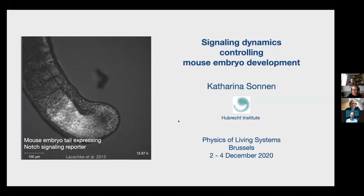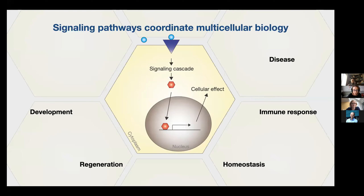In my lab, we study how multicellular systems develop and how they are maintained in the adult, and how signaling pathways control these processes. In multicellular systems, cells have to communicate with each other to coordinate development, regeneration, or the immune response. If something in this communication goes wrong, diseases can develop such as cancer. Therefore it's important to understand precisely how signaling pathways function.